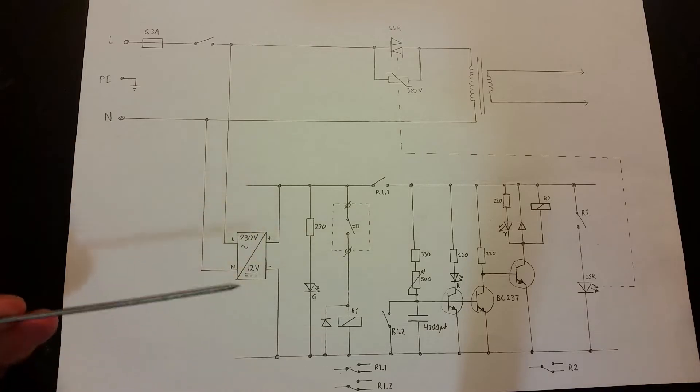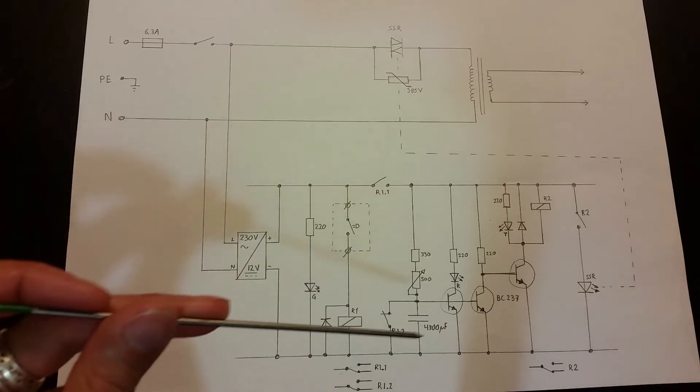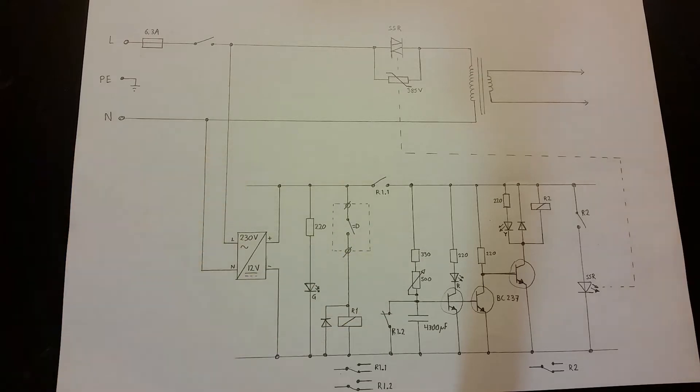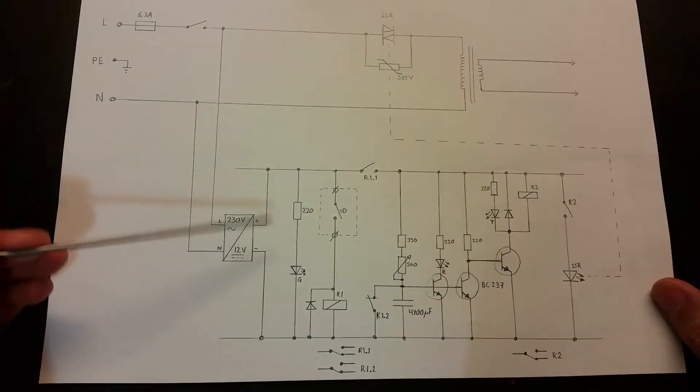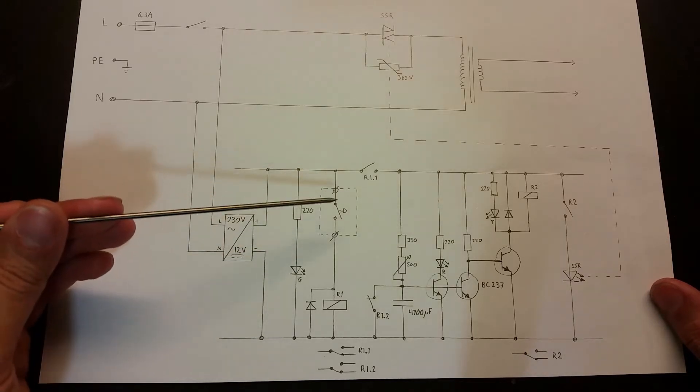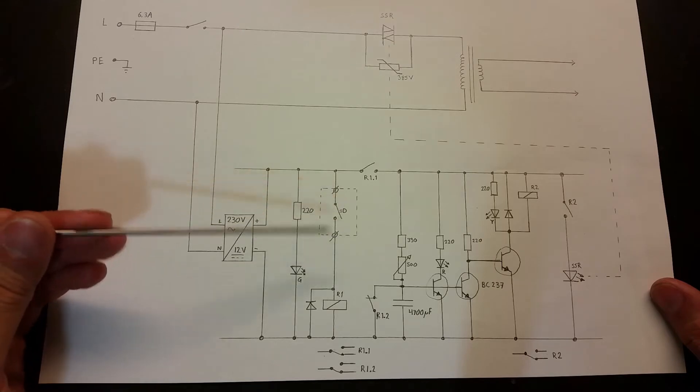And here you can see it's a pretty simple RC circuit using these resistors and capacitor here to determine for how long the welding should last. After the power adapter here we got an indicator LED, the green one, which says that the power is turned on. After that you can see here this is the foot pedal - when you push that one in it will turn this relay on with a flyback diode here.